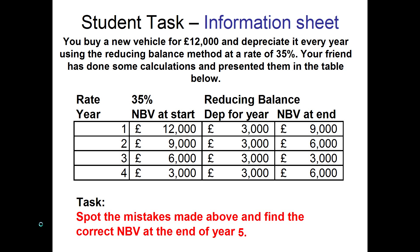If you look at the information, the first column is the years — that's fine, one to four. The NBV at the start: year one is 12,000, year two is 9,000, year three is 6,000, year four is 3,000 — nothing wrong with that. It's the actual depreciation calculations. The depreciation for year one is 3,000 pounds, and there is an error with that. If we work out the maths, what percentage is 3,000 of 12,000? It certainly isn't 35%. So that is the first mistake — the 35% reducing balance method hasn't been used.